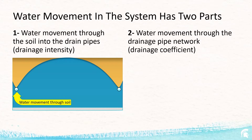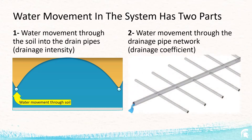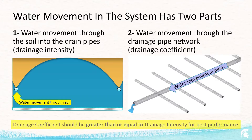The second part is water movement through the drainage pipe network. This is known as the drainage coefficient, in units of inches per day, and you can see in this graph. Drainage coefficient should be greater than or equal to drainage intensity for best performance.